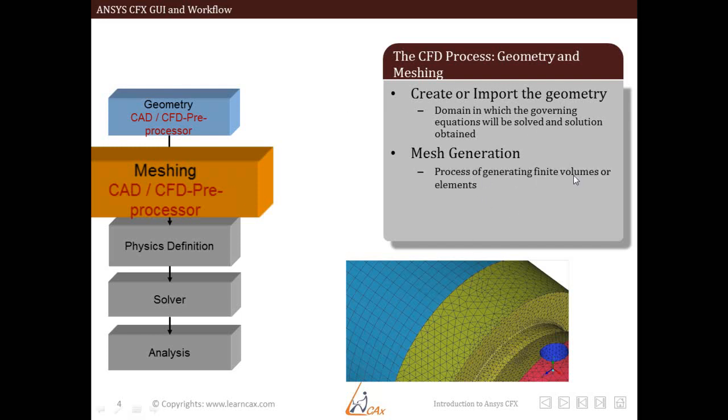The process of generating finite volumes or elements or dividing that particular geometry or domain or volume into grids is called mesh generation. Mesh can be generated in different sessions or imported from another meshing utilities also. So, as we already stated, we generate the mesh in ANSYS ICEM CFD.